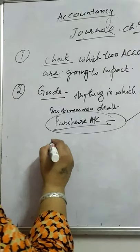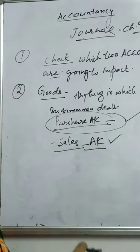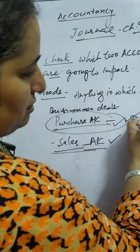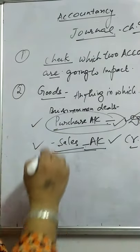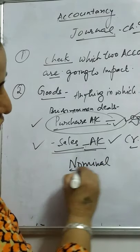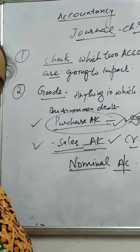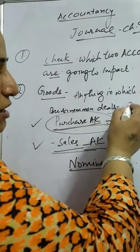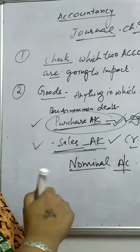Purchase account is treated only for the purchase of goods. Whenever a businessman sells goods, only the sale account is to be used, not the goods account. Purchase account is always debited; sale account is always credited. The reason behind this is the nominal account rule — all expenses and losses are debited, all incomes and gains are credited. Purchases are losses or expenses; sales are income.